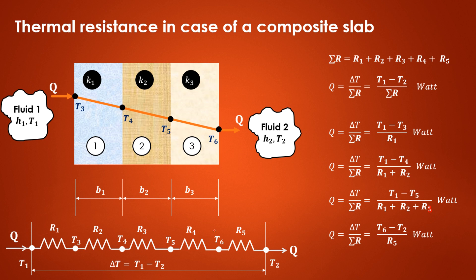For the temperature difference between T6 and T2, only one resistance R5 is present, as indicated. In this way we can find out the interface temperatures T3, T4, T5, and T6. This is how we determine thermal resistance in case of a composite slab having combined conduction and convection. Thank you very much for watching.